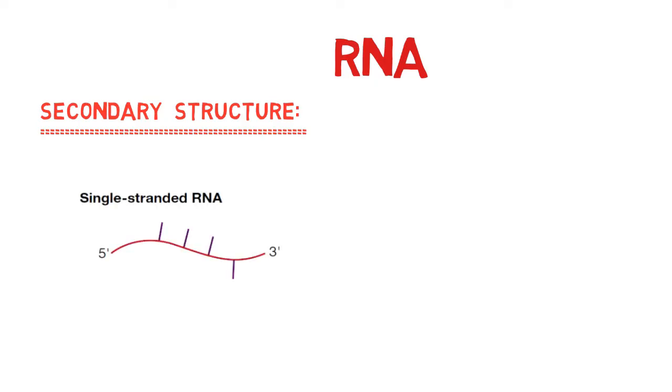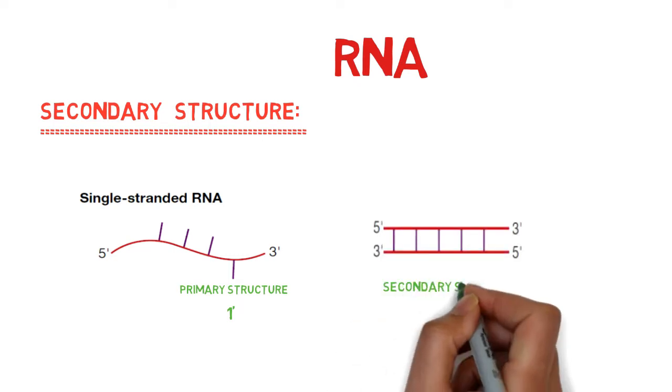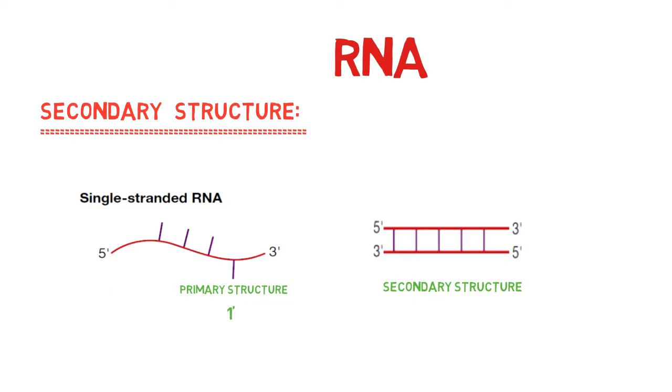All the complementary bases of RNA combine to form RNA secondary structures. Simple nucleotide sequences of RNA are called primary structures and denoted by one prime, while when these nucleotides fold together and form a complex structure, that is called secondary structure and denoted by two prime.